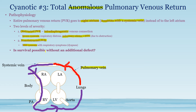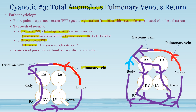Is survival possible without an additional defect? Without one, there is never any connection between the two systems, and the left side of the heart cannot pump oxygenated blood to the body. In both obstructive and non-obstructive pulmonary venous return, there must be some connection — either through a PDA, an atrial septal defect, or a patent foramen ovale — in order for survival to be possible.